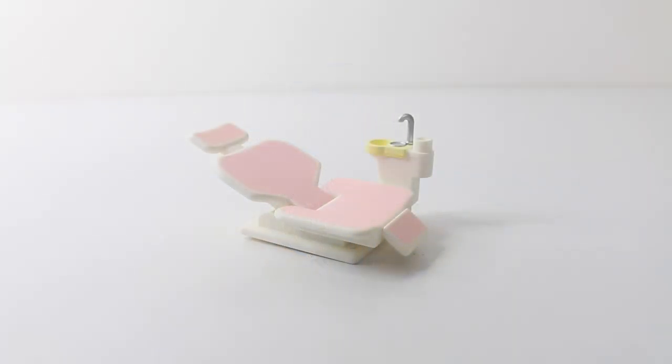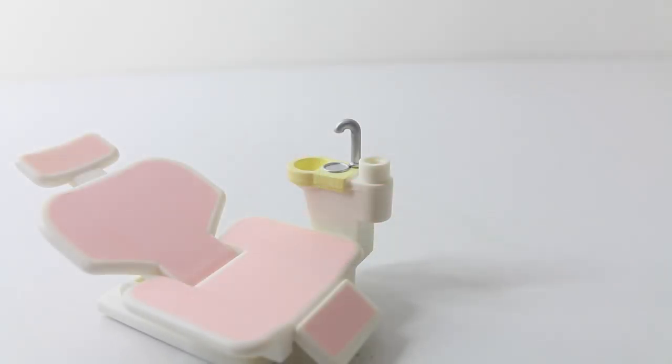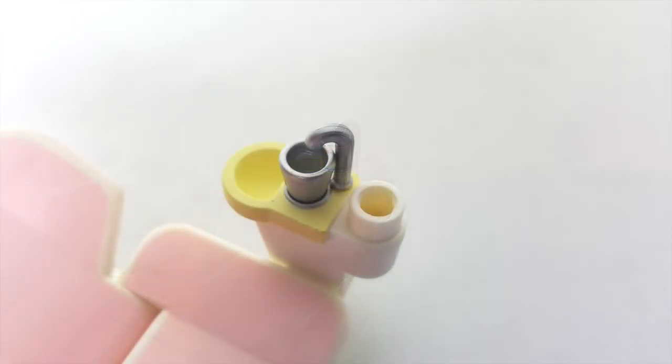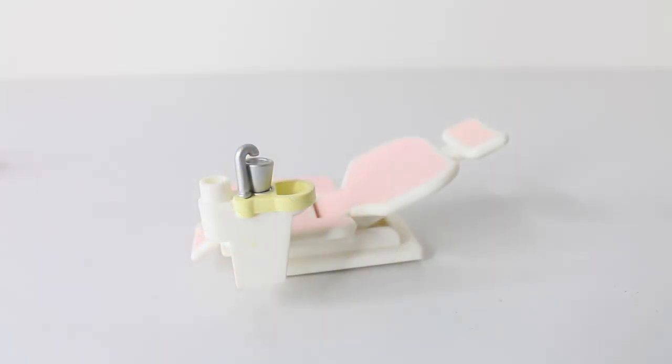So the first thing we'll take a look at is the dentist chair and this is done in pink and white. And the back of the chair is also adjustable so you can move it up and down. And attached to the chair we have a little yellow basin and a silver fountain. We can also place the silver cup which is also included under the fountain and this is to use to rinse.